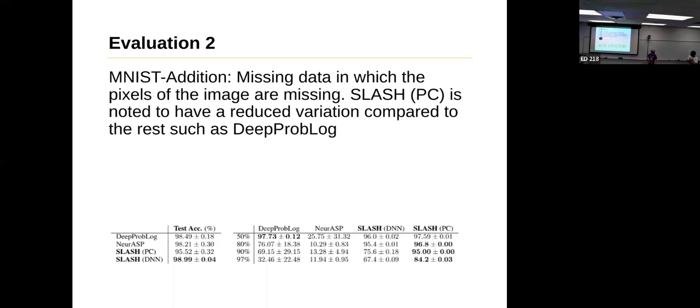But as long as I have like a white pixel somewhere in a certain spot, SLASH, or the probabilistic circuit goes, oh, that makes sense. Like dumb question, but there's two images, right? So which one are we taking pixels out of? Both. We can take pixels out of both, that won't matter.